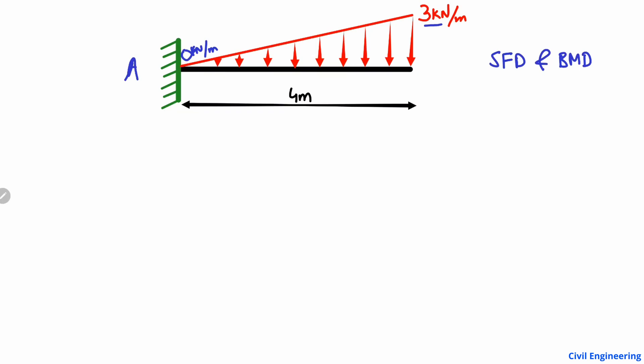Now, first of all we have to find the support reactions, and then draw the shear force and bending moment diagram. I'm going to explain this in a very simple and easy way — just follow this method and you can draw the shear force and bending moment diagram for such a beam quickly.